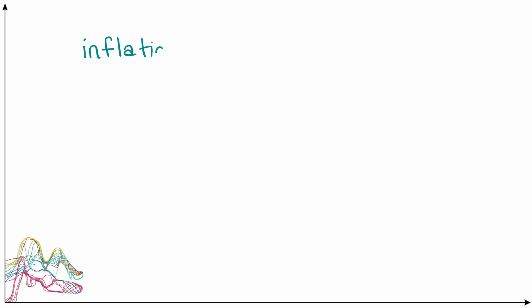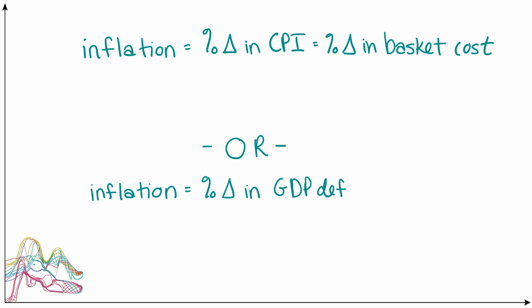Coming back to talk about inflation specifically, which we said was the growth rate of a price level, we could say that one way to measure inflation is to calculate the percent change in the consumer price index. Actually, mathematically, that would be the same as calculating the percent change in the cost of the basket of goods and services itself. Even though this is the way that the inflation we usually see reported is generally calculated, it's not the only possible way to calculate inflation. For example, we could also calculate inflation by looking at the percent change in the GDP deflator. Notice that the GDP deflator is P times 100, but mathematically, that's equivalent to just looking at inflation as the percent change in that measure of P itself.